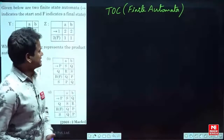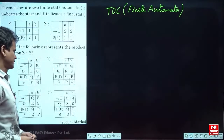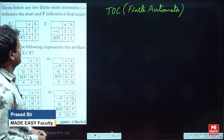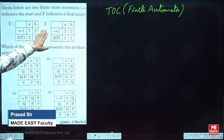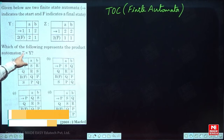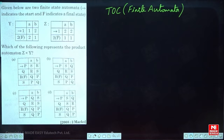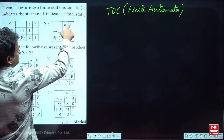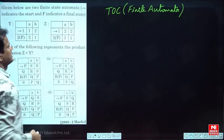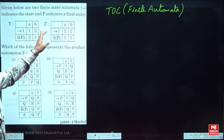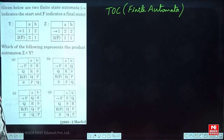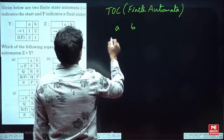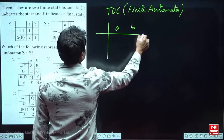Hello, this is a previous question from 2008. The subject is TOC and the topic is finite automata. They have given two automata, Y and Z, and asking for what is the cross product of Z cross Y. Z has two inputs A and B and two states 1 and 2. I am writing here Z with inputs A and B.